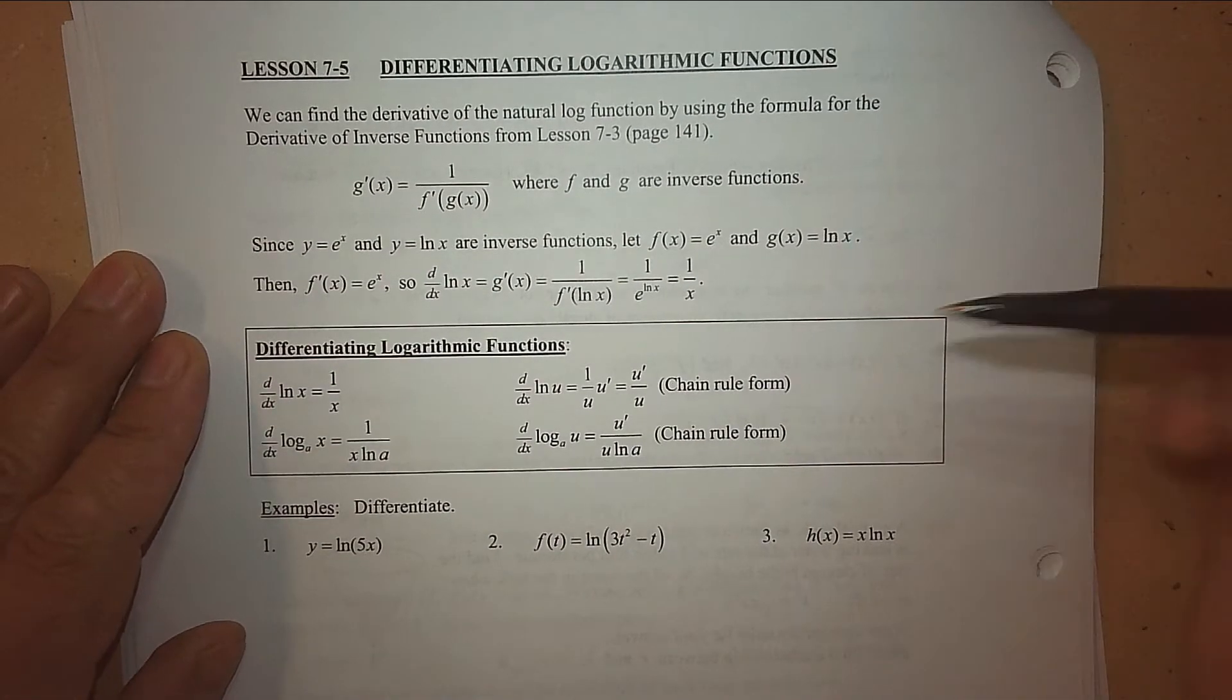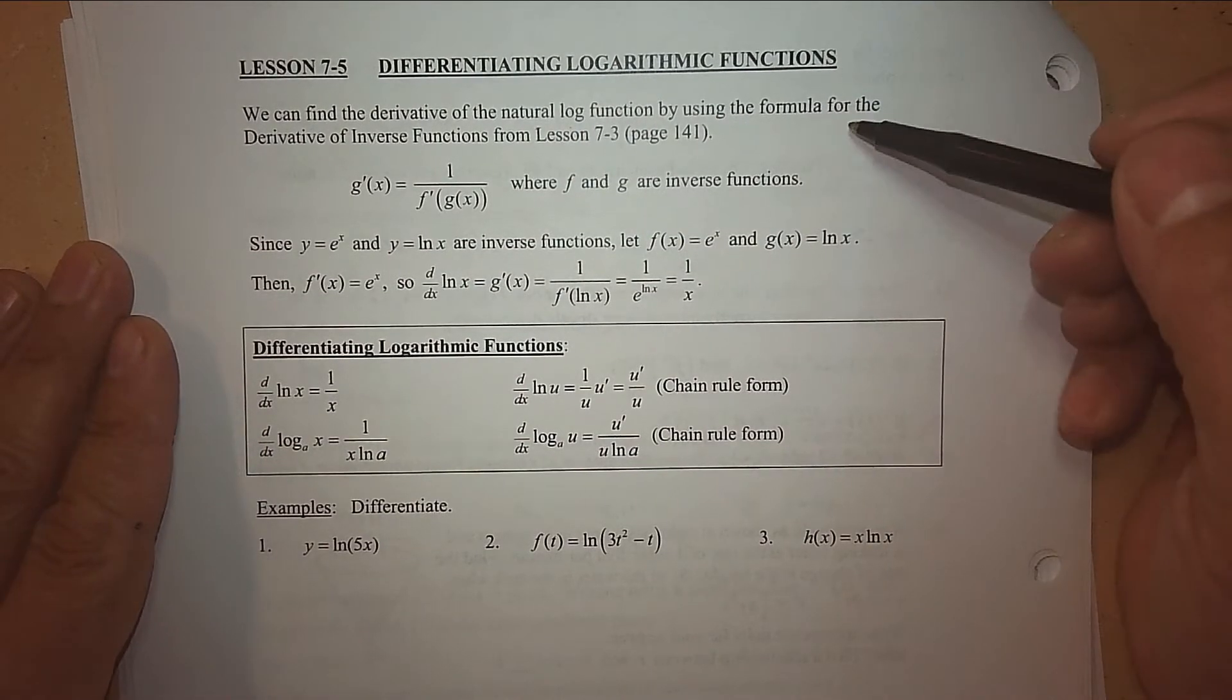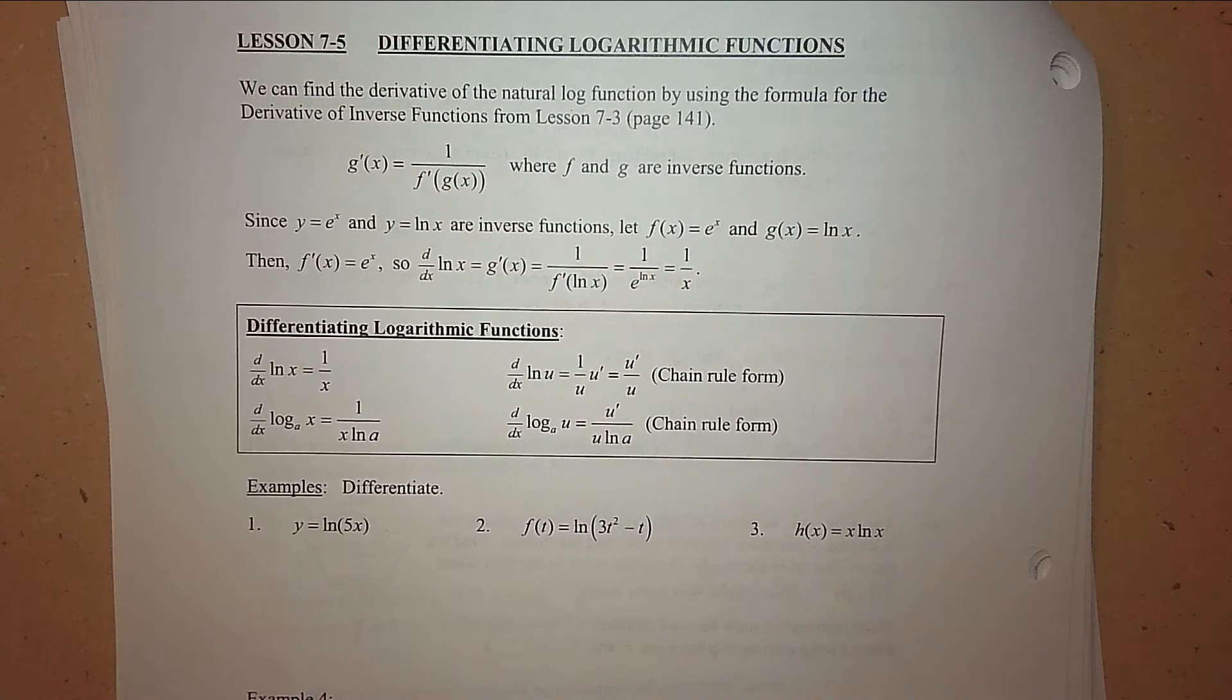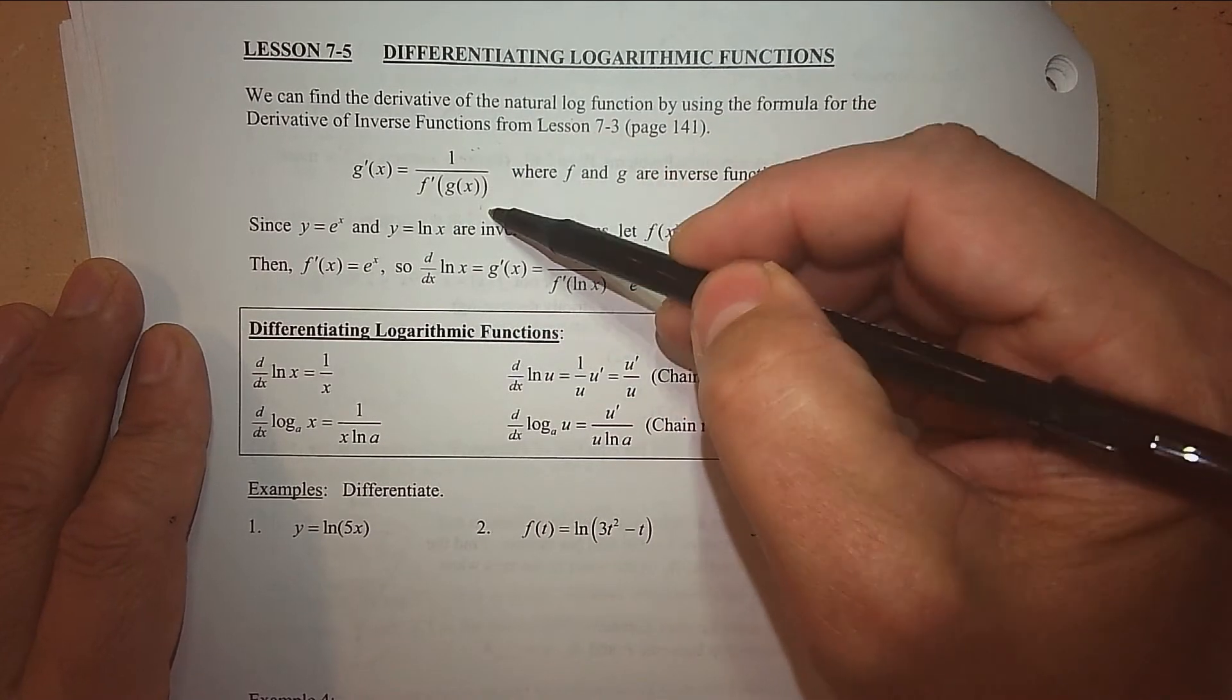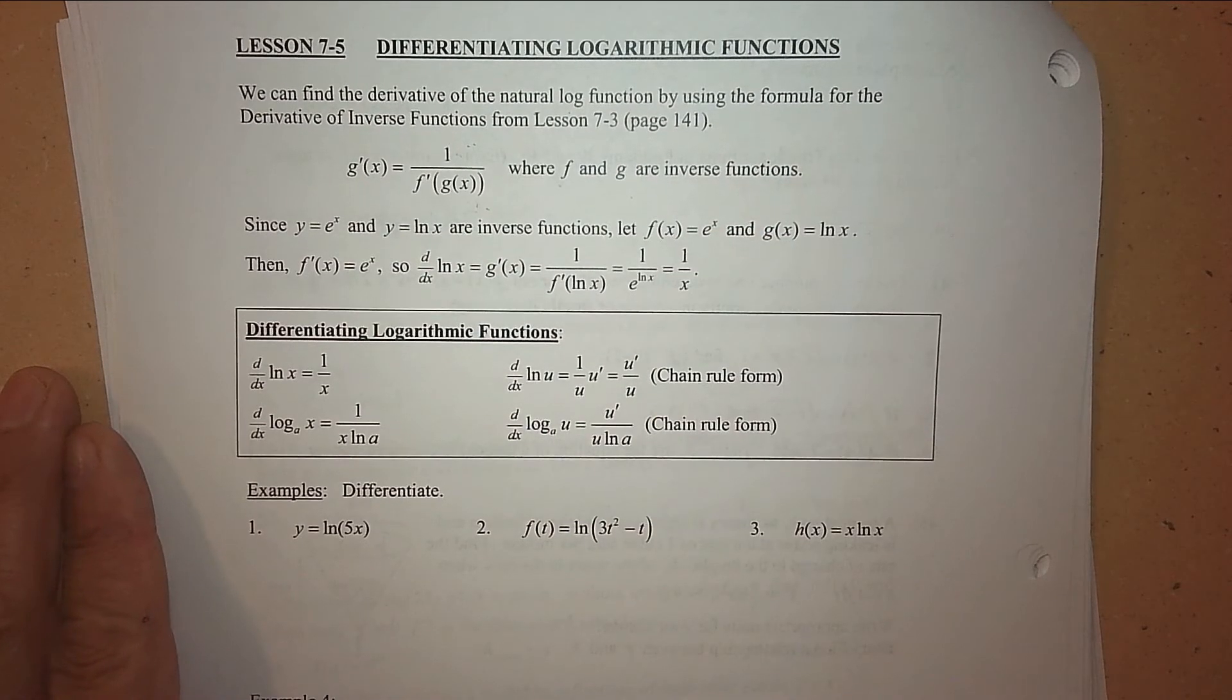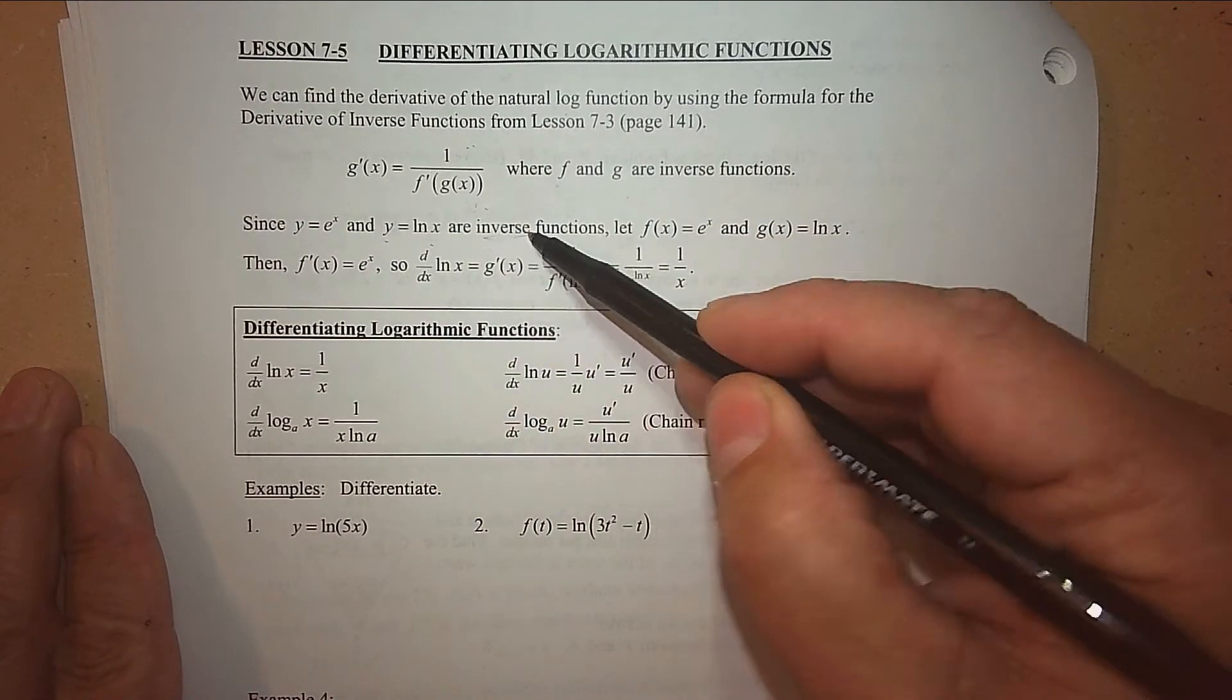We can find the derivative of the natural log function by using the formula for the derivative of inverse functions. The reason is exponentials and logarithms are inverses. We already had a unit on how to do the derivative of an inverse - they're connected. This means the reciprocal.